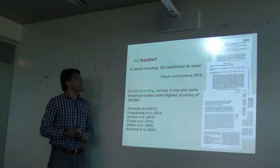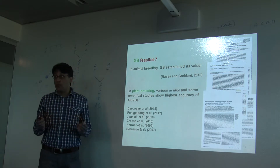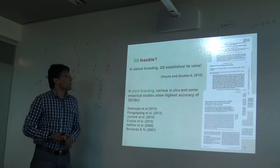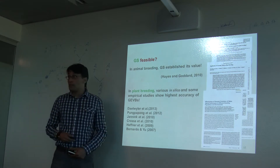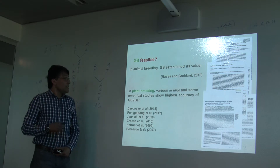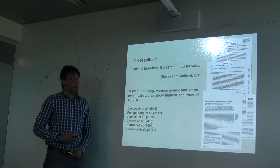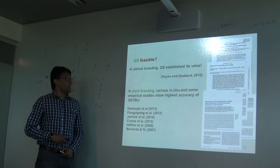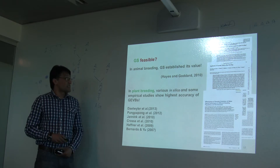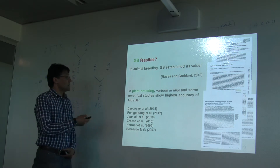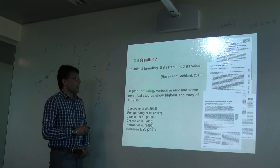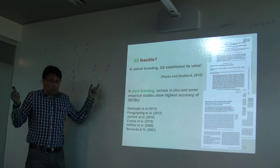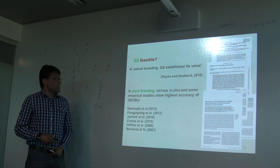The question is whether genomic selection is a practical way to execute. In animal breeding it has already established its value through different large data sets. In plant breeding the phenomenon is still in its infancy, but there are studies showing high accuracy of genomic estimated breeding values. There are some papers on this that interested readers can explore.